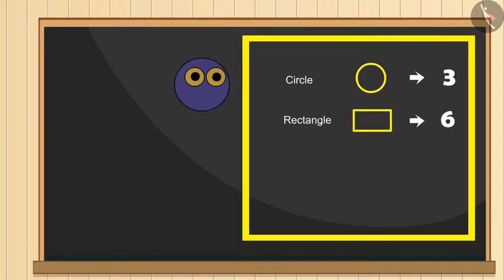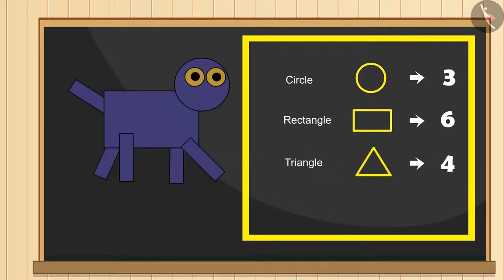Then its tail and four legs can be made with six rectangles. Now its ears, nose and upper part of its tail can be made with four triangles. At the end, its claws from four squares.